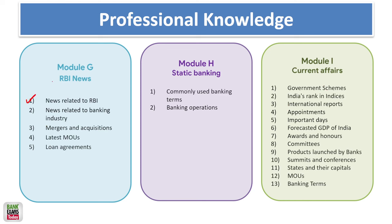For current affairs related to RBI, cover recent news such as the UPI limit increase for hospitals and educational institutes, RBI's growth projection of 7% for Q1 2024, any mergers or acquisitions in the banking or financial industry, latest MOUs, loan agreements, committees, commonly used banking terms, banking operations, latest government schemes, India's rank in recent indices, international reports, important appointments, forecasted GDP by various institutes, awards and honors in banking, product launches by banks, summits and conferences, and states with their capitals and governors.